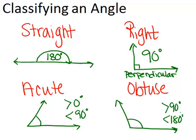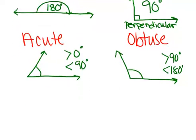And those are the four main classifications that you should know. You might wonder, well, what about an angle that's greater than 180 degrees? So let's draw one of those and think about that for a moment.